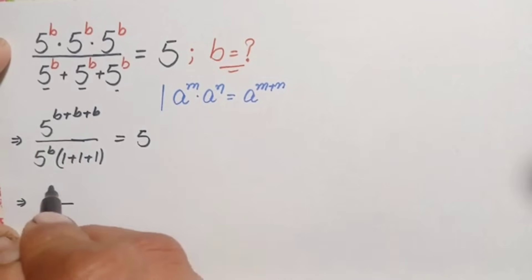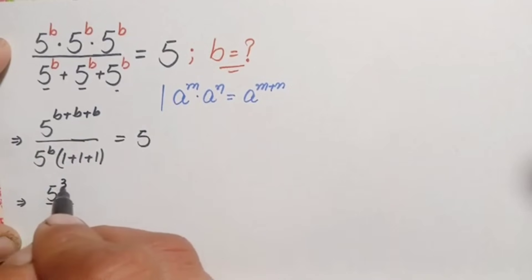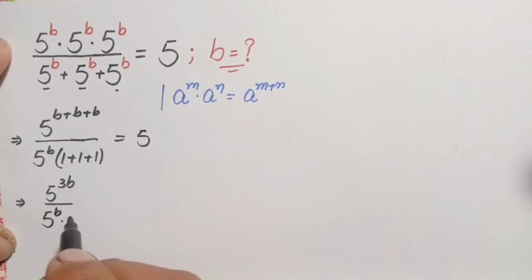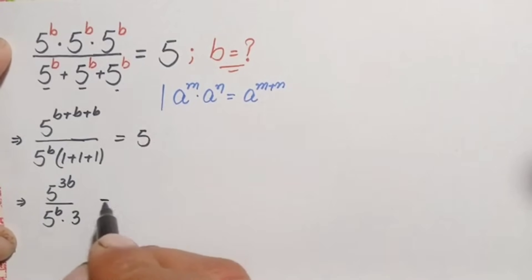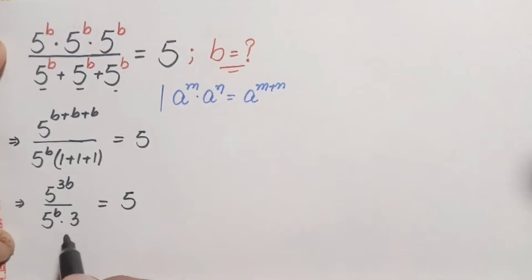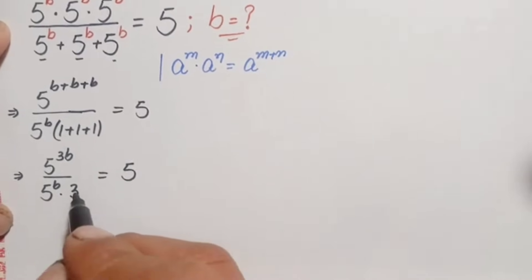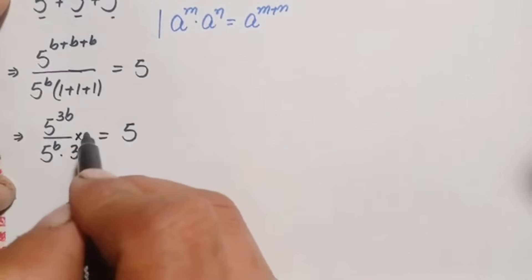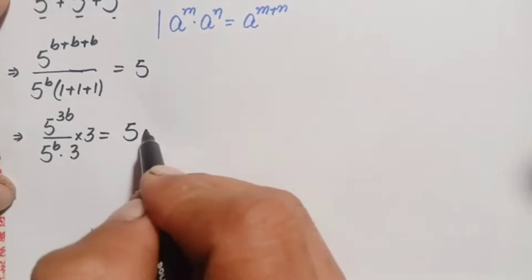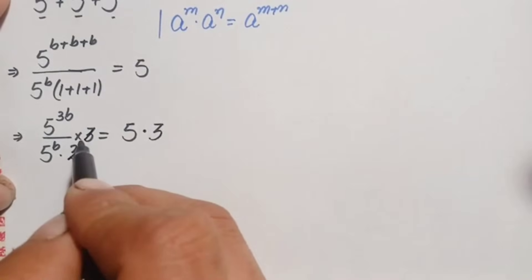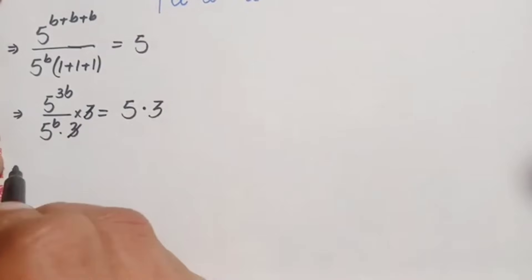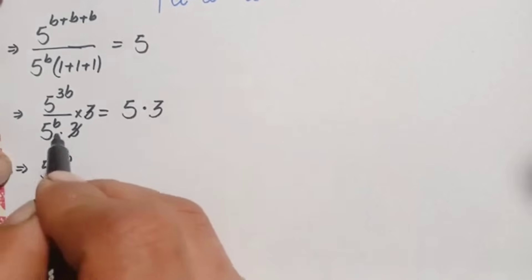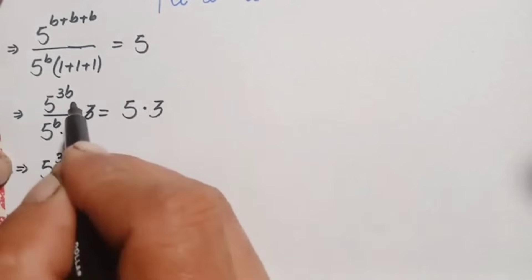So the left hand side becomes 5 raised to power 3b, divided by 5 raised to power b times 3, is equal to 5. Now to eliminate the 3 from the denominator, we multiply both sides by 3. The 3 cancels, and we move 5 raised to power b to the numerator.